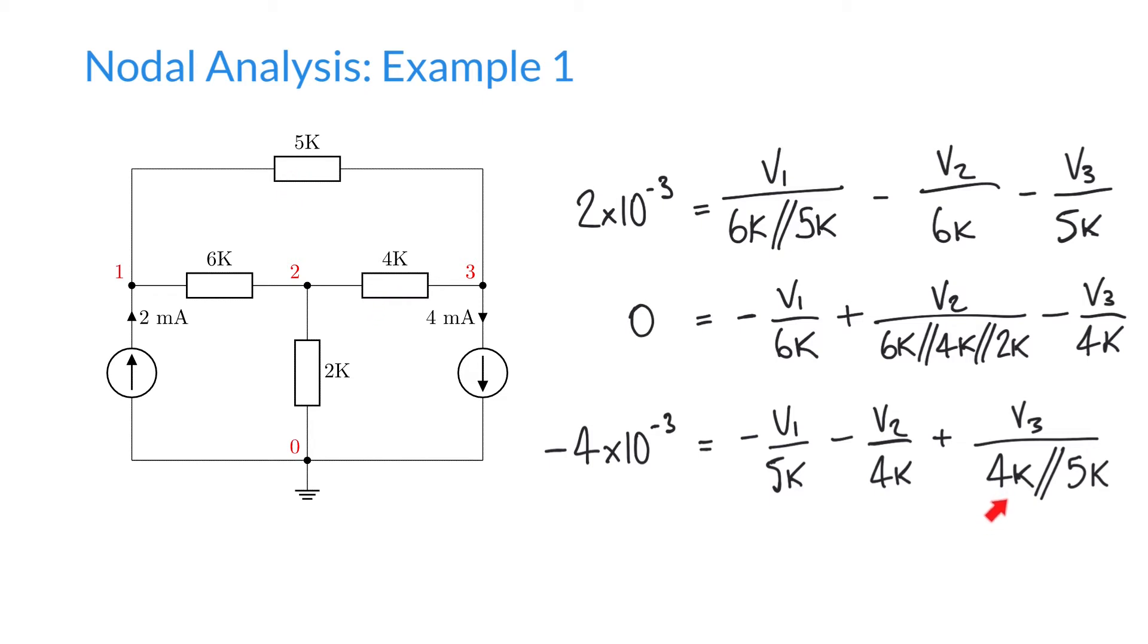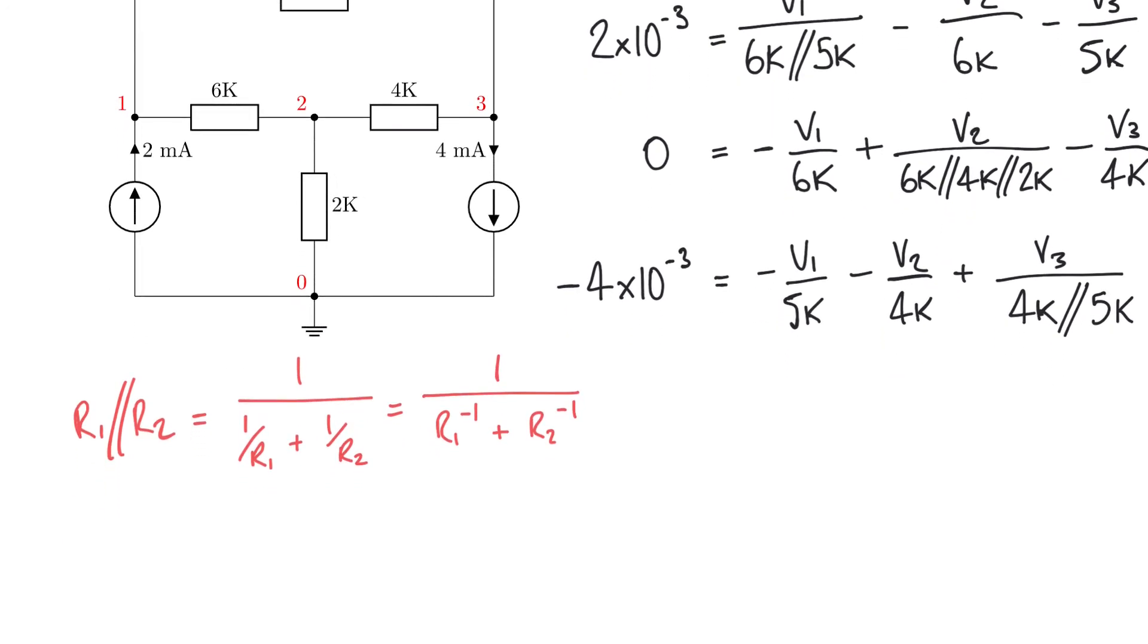Just a quick side note before we continue: this double slash notation that I've been using here, I use this as a shorthand for resistors in parallel. Rather than writing this out in full, it just helps to keep these equations a bit tidier. But in practice we know that if I write r1 in parallel with r2, what I really mean is the reciprocal of one over the reciprocal of r1 plus the reciprocal of r2. Or we could write three resistors in parallel: r1 in parallel with r2 in parallel with r3.